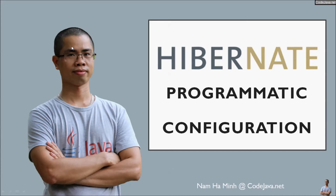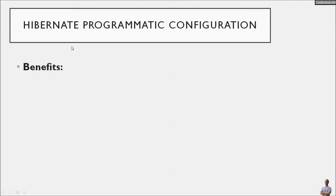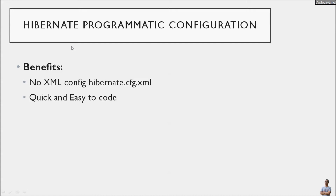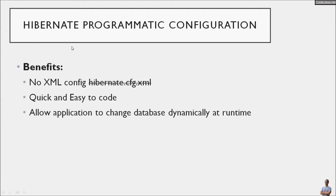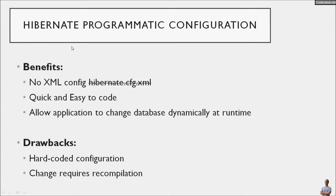Instead of using XML configuration, here are the benefits of using Hibernate programmatic configuration. No XML config means you don't have to use the hibernate.cfg.xml file anymore. It's very quick and easy to code the configuration inside a Java class. However, programmatic configuration also has some drawbacks — since the configuration is hardcoded in the Java file, any changes require a recompilation of your code.